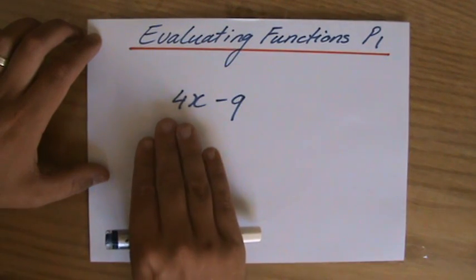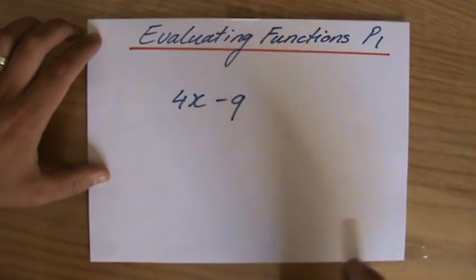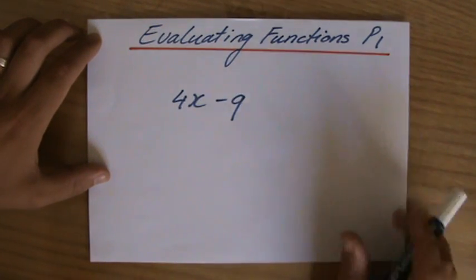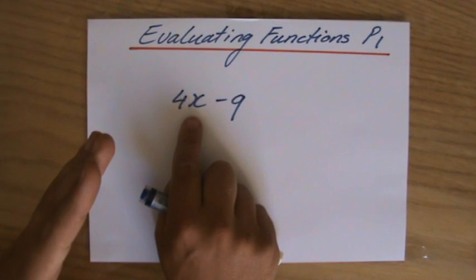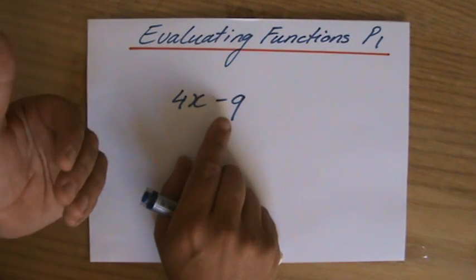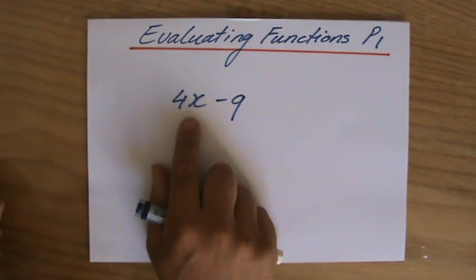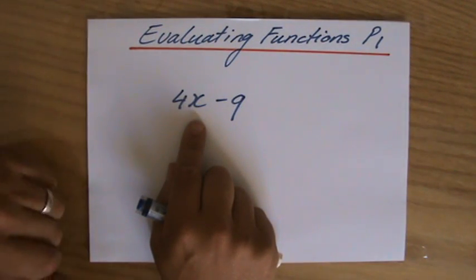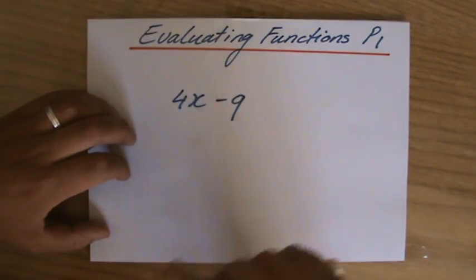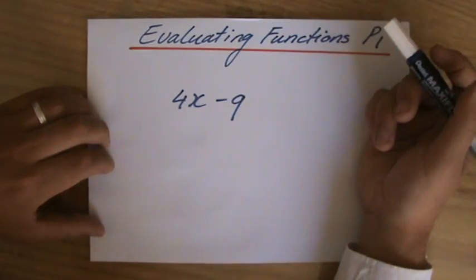Now, if we look at the expression 4x minus 9, then the numerical value of that expression depends on the value of x. If x is 3, for instance, you will get 4 times 3, which is 12 minus 9, so then the value would be 3. But if x would be 5, then the value of this expression is 4 times 5, which is 20, minus 9, which equals 11. So the value of this expression depends on what you put in for x.